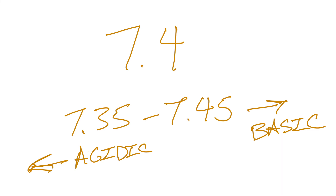In chemistry, we call anything less than 7 acidic, but in the human body, we call anything less than 7.35 acidic. So 7.3, which would be basic in chemistry, is actually considered acidic in the body. That's a detail you'll want to remember when we start talking about acid-base balances.